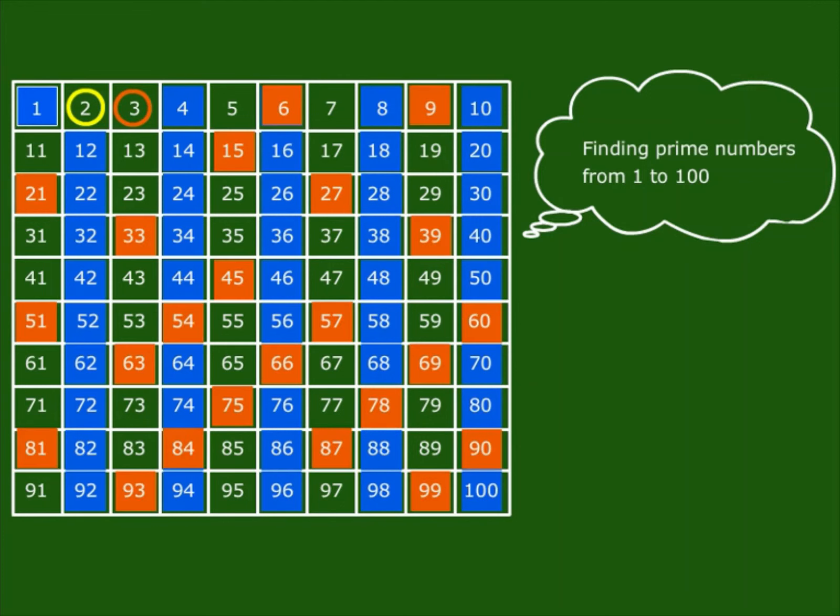Then circle three and cross all the multiples of three. Next the number four is already crossed, so we circle five and cross all the multiples of five. The next number is six which is already crossed. So we circle the number seven and cross all the multiples of seven.